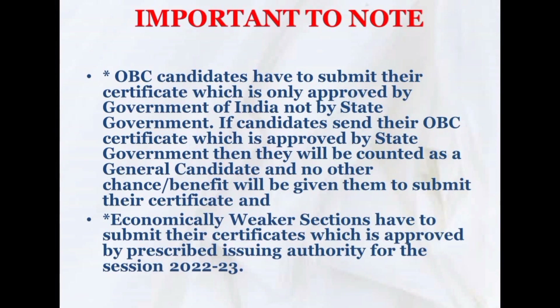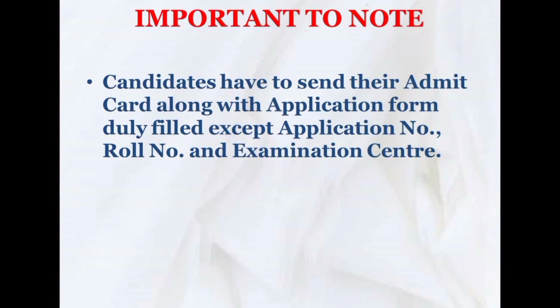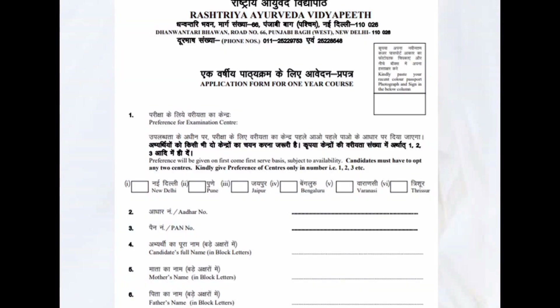OBC and EWS candidates please note: the certificate should be in central government format — the state government format is not valid. In the admit card, the student has to fill all information except the application number, roll number, and examination center — those will be provided.